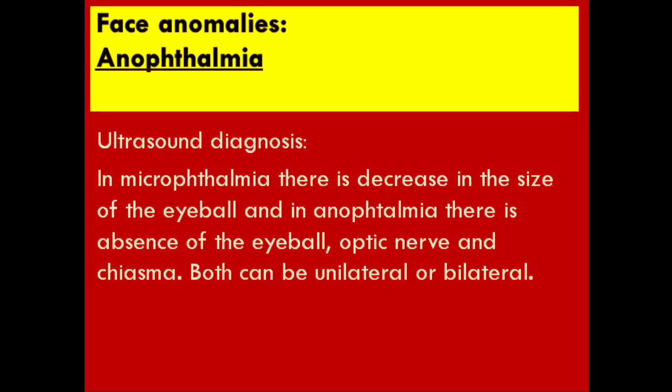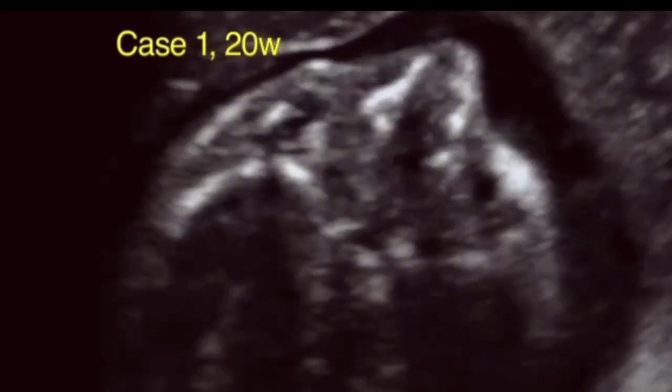Assalamu alaikum, hello everybody. Today we will talk about ultrasound of fetal face anomalies. Number one: anophthalmia and microphthalmia. In microphthalmia there is a decrease in the size of the eyeball, and in anophthalmia there is absence of the eyeball, optic nerve and chiasma. Both can be unilateral or bilateral.